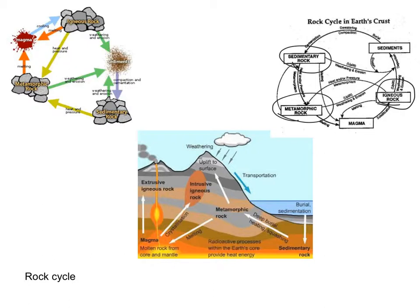Igneous rock is probably a great place to start the rock cycle. These are rocks that are formed directly from magma — molten material, rocks that have been completely melted through underground processes involving the mantle and the upper part of the crust. When that magma cools down enough, it's going to form rocks.